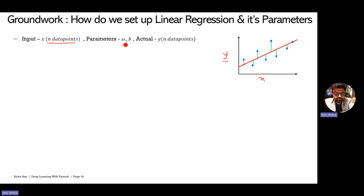We have model parameters, which I'll talk about in detail. We also have actual Y values for all N data points — these actual Y values are nothing but my labels for the regression problem. For example, if I design a housing price prediction, my Y variable would be the price of the house, and my X variable would be the number of rooms as input to the model.